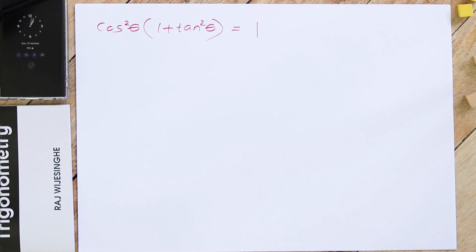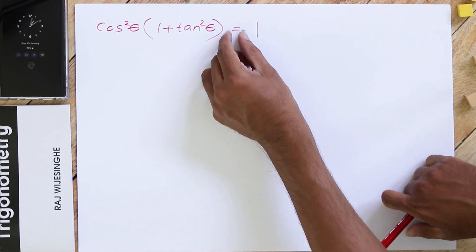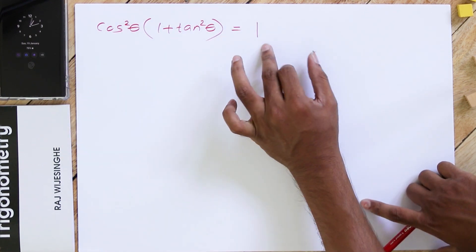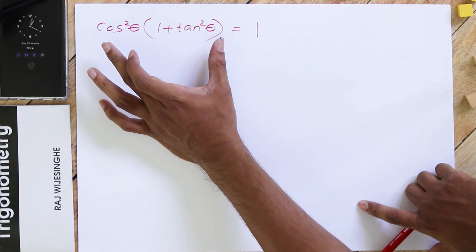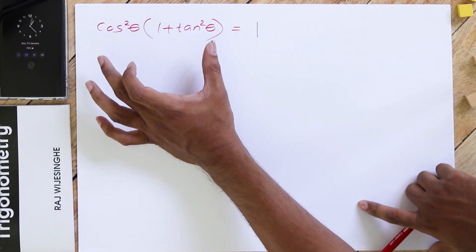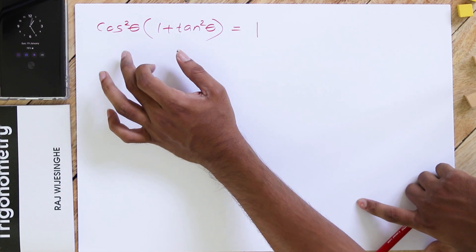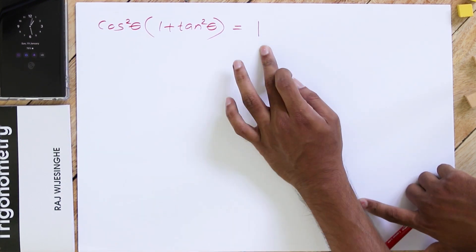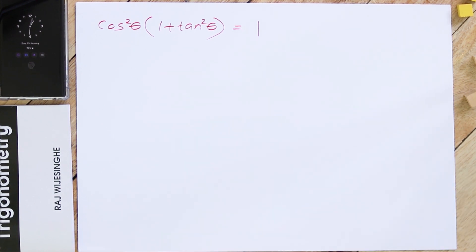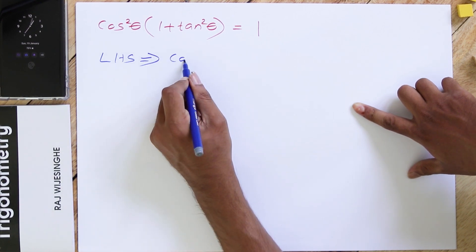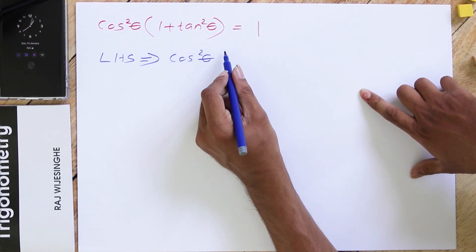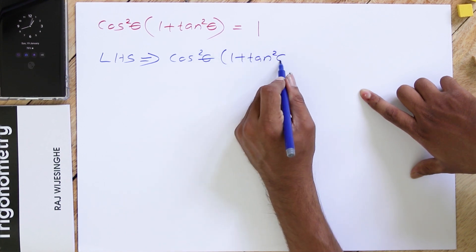In a trigonometric identity equation, there will be two sides. The left side of the equal mark is the left hand side and the right side is the right hand side. What we do is take one side — here, since we have more material on the left hand side, we take LHS and do some simplification to get 1, which is the right hand side. So we write LHS: cos²θ × (1 + tan²θ).